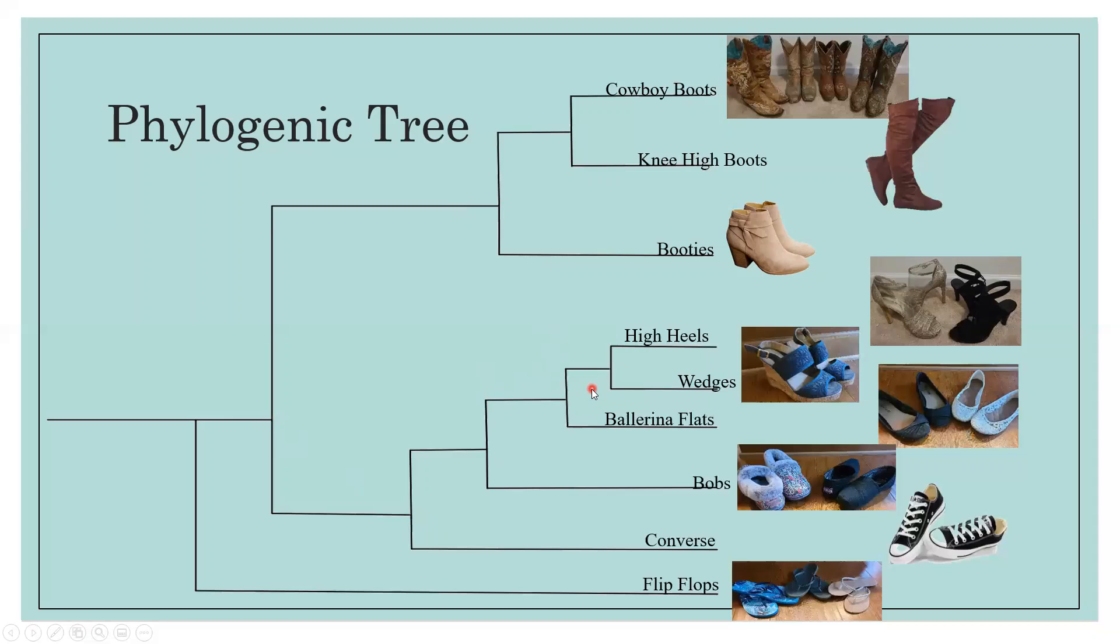So I decided to draw my tree this way because there are two groups of shoes, meaning the boots and the other shoes. So I thought cowboy boots and knee-high boots were more similar than the booties since they have a similar shape and amount of coverage. Then would be the booties since they are a little bit smaller and have a heel, so they're a little bit more dressy.